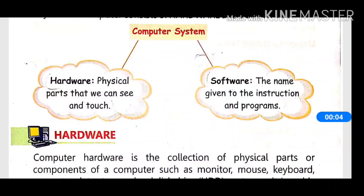Hello students, as you know in the previous video we have already read some of the topics in this chapter. In this video we will read our other topics. A computer system is a collection of many devices which coordinate with each other to perform a task. In this video we will learn about hardware and software.